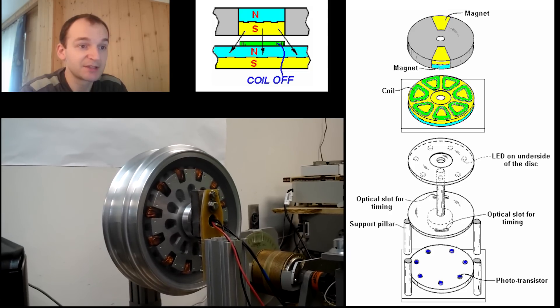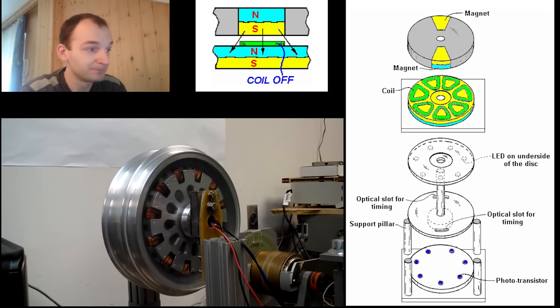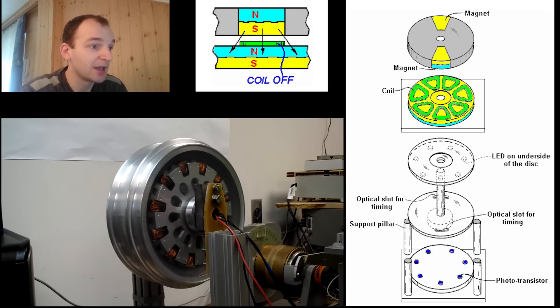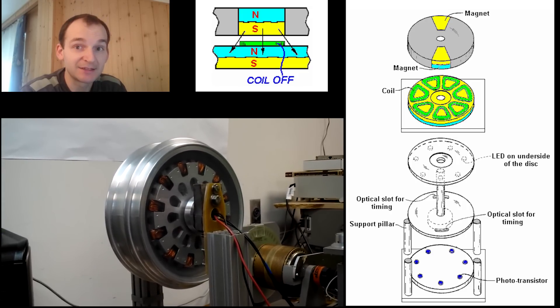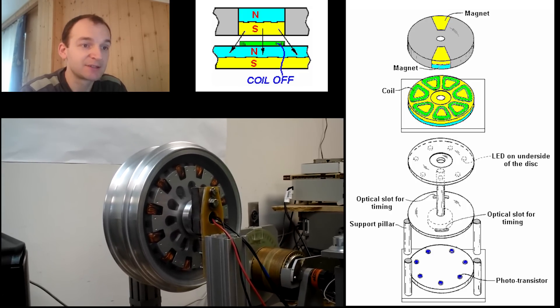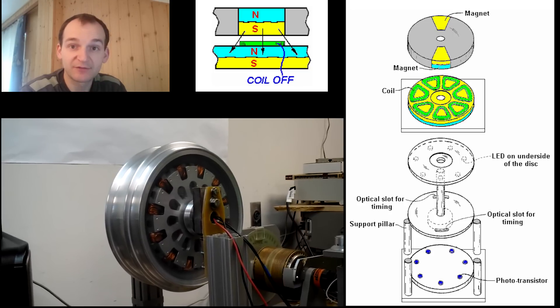Positioned above it is a disc made of non-magnetic material shaded in gray and which has two magnets embedded in it. This disc is the rotor and it's attached to the central vertical shaft.